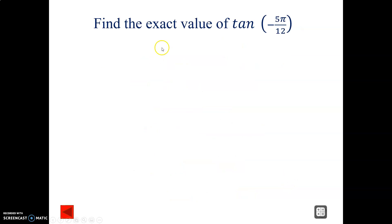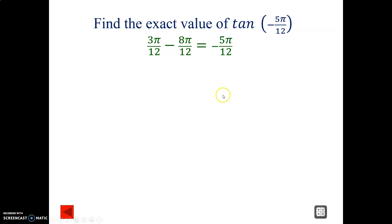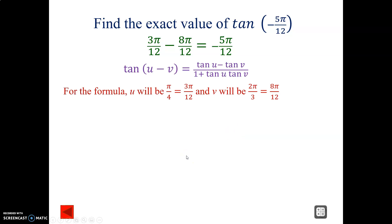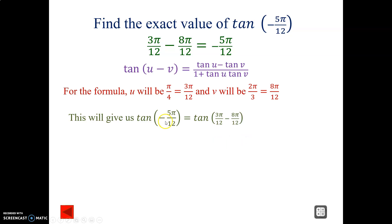Another problem — now let's use radians. Find the exact value of tan negative five pi over 12. Using the strategy, three pi over 12 corresponds to 45 degrees in radians. Three minus eight is negative five, so three pi over 12 minus eight pi over 12 gives us negative five pi over 12. We'll be using the subtraction identity, where U is pi over four (three pi over 12 reduced) and V is two pi over three (eight pi over 12 reduced).